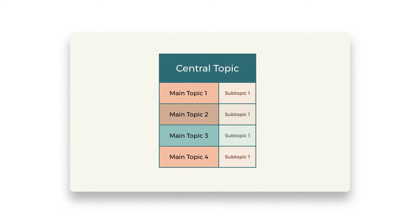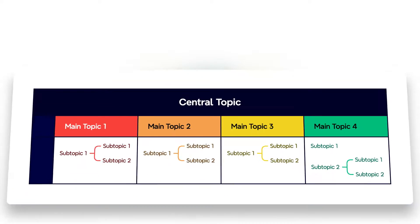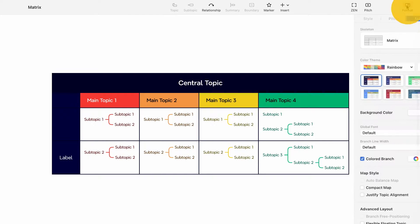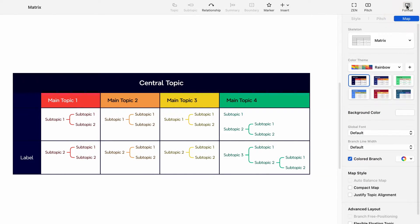To change a topic structure in XMind, just select a topic, go to the map section on the right panel, and find the skeleton section to make adjustments.